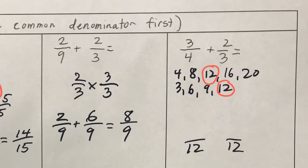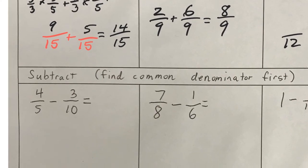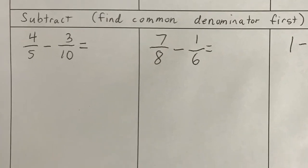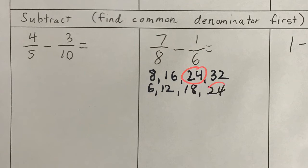And the next part, very similar except now we're just subtracting. Let's do the next one: 7 eighths minus 1 sixth. If your multiplication is good, you can do this part in your head. But I'm going to list the multiples of 8: 8 times 2 is 16, 8 times 3 is 24. I can keep going. That's probably enough. Multiples of 6: we have 6, 12, 18, 24. We've got to go all the way to 24 to find a common denominator.